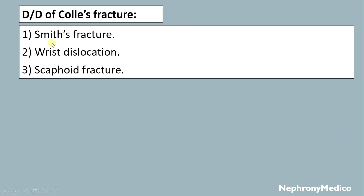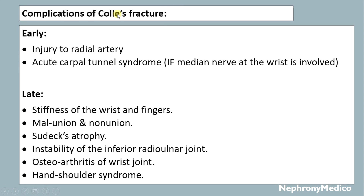Differential diagnosis of Colles' fracture includes fracture of the wrist, wrist dislocation, and scaphoid fracture. Complications include early: injury to the radial nerve and acute carpal tunnel syndrome. Late complications include stiffness of the wrist and fingers, malunion, nonunion, Sudeck's atrophy, instability of the inferior radioulnar joint leading to arthritis of the wrist joint, and hand-shoulder syndrome.